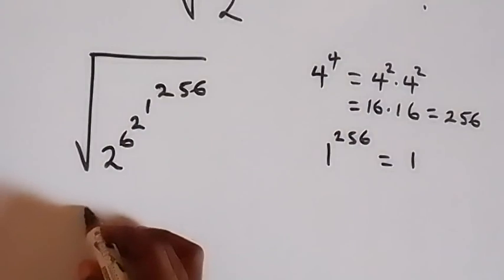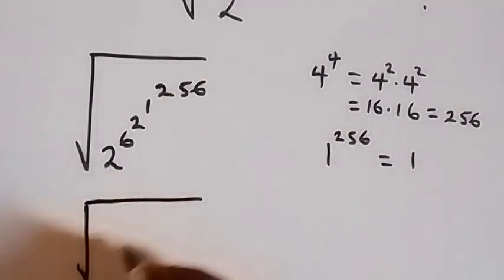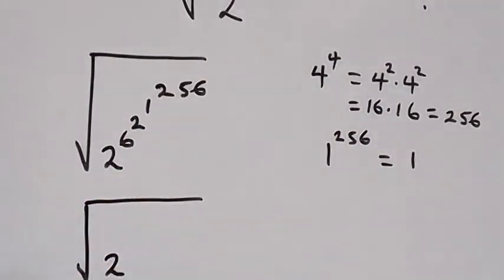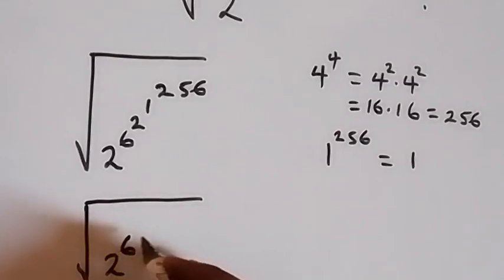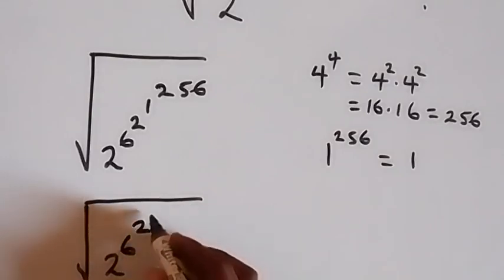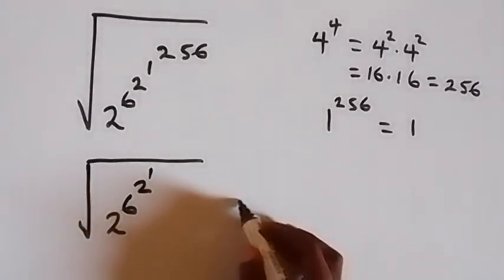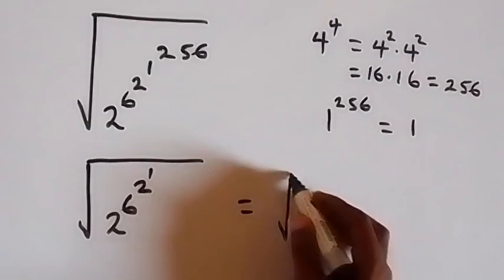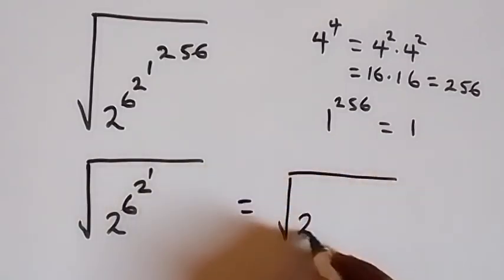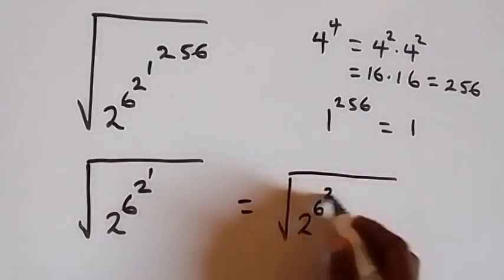From here, what we're left with will now be square root of 2 raised to power 6, raised to power 2, then raised to power 1. And 2 raised to power 1 is just 2. So we have this equal to square root of 2 raised to power 6, then raised to power 2.